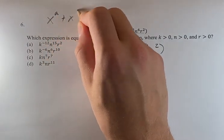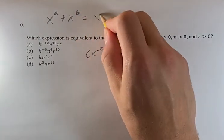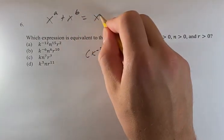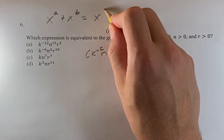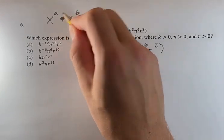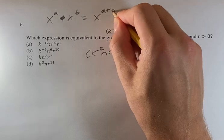If you have x to the a times x to the b, that's going to be equal to x to the a times x to the b is equal to x to the a plus b.